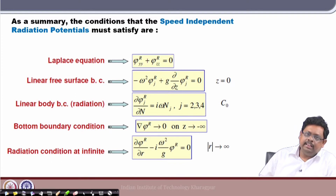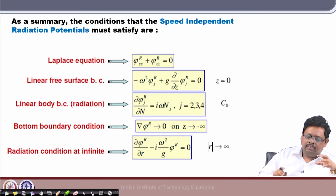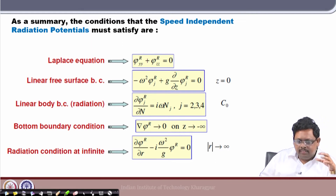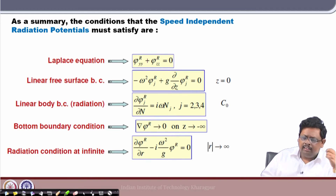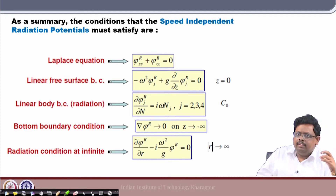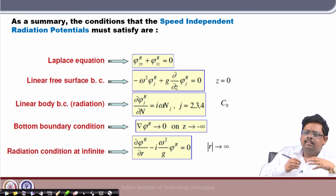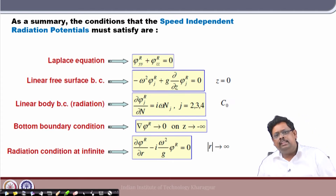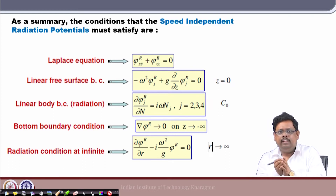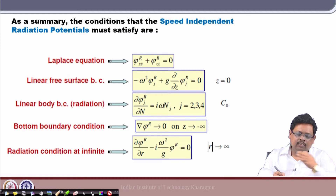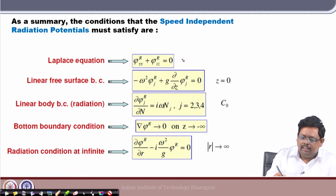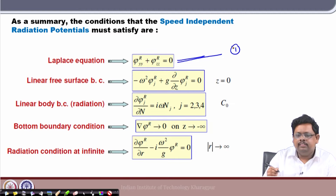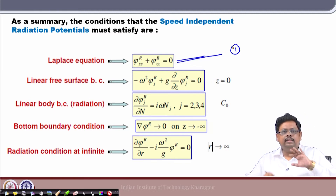For finding out the radiation force, we are solving the zero-speed problem. Then we introduce some kind of forward-speed effect when finding the added mass for the three-dimensional body. From the equations, one can also understand that the two-dimensional problem is solved at zero speed. Here we are dropping the x-term, so the Laplace equation is simplified — this is the simplified equation 1.